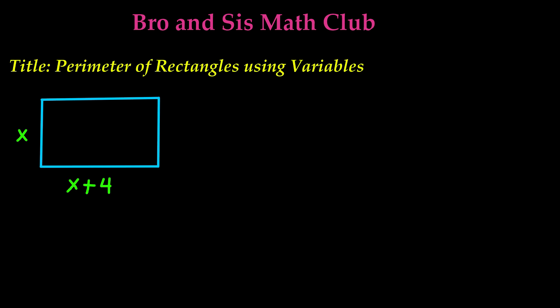I'm pretty sure you guys all know how to find the perimeter of a rectangle using just numbers. In order to find the perimeter of a rectangle, you have to add all the sides together. So what if you have variables? Well, you're going to use the same method. You have to add all the sides together.